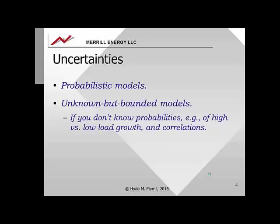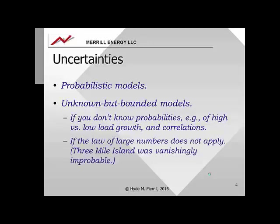For instance, the probability of high load growth versus low load growth, and if you don't know the correlations among various uncertainties. Unknown but bounded models are also useful in situations where the law of large numbers doesn't apply. For example, the Three Mile Island disaster was vanishingly improbable, but it still happened. Unknown but bounded models are used to anticipate unlikely but high-impact futures.